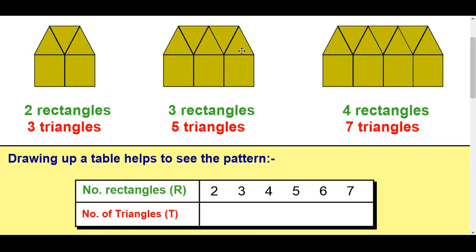Three triangles on the top. Three rectangles, one, two, three, four, five triangles on the top. Four rectangles, seven triangles on the top. So let's draw a table out and see if we can work out what's happening.